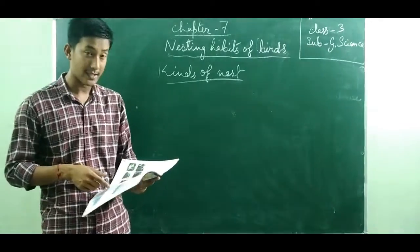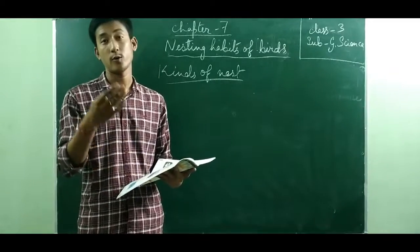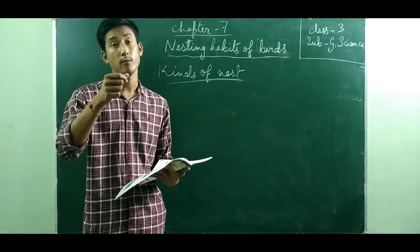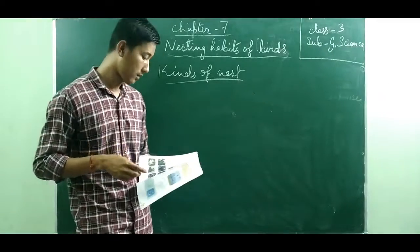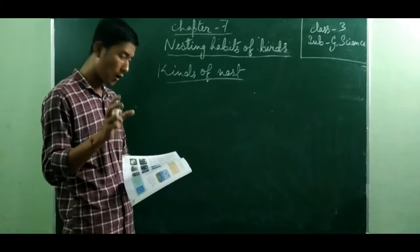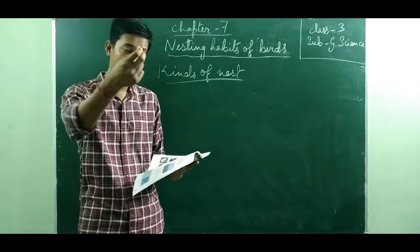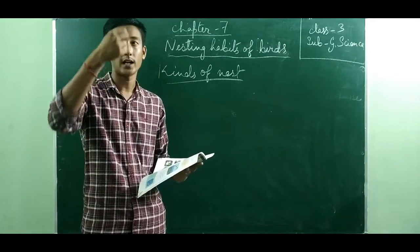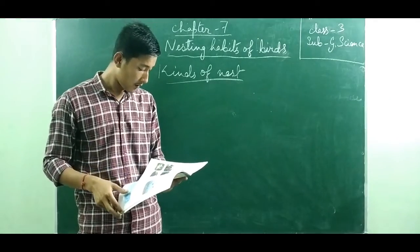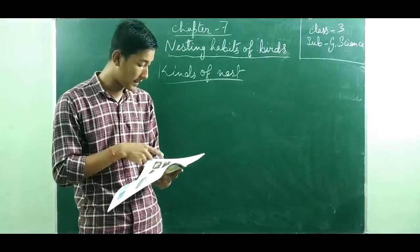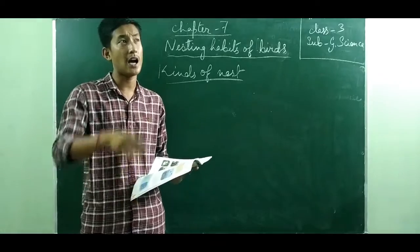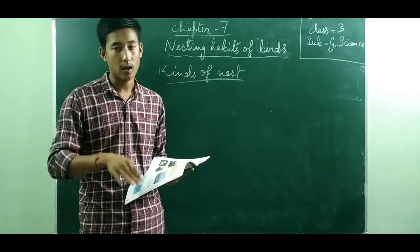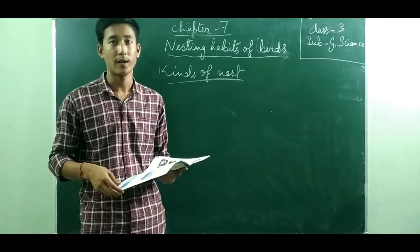An eagle builds its nest high on trees or cliffs with sticks and twigs. In our locality you can see the weaver bird's round, ball-type nest on a betel nut tree, with a hole at the bottom from which the bird enters and exits. Eagles build their nests high on mountain cliffs or high trees — not on the ground or on small trees.